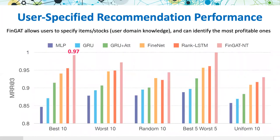FinGET also allows users to specify their stock pool with their prior knowledge, and further, we can boost the performance of MRR@3 up to 0.97, which indicates FinGET could find high profitable stocks efficiently.